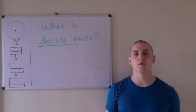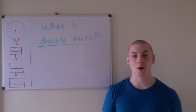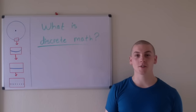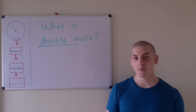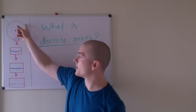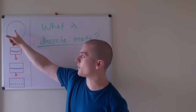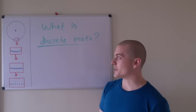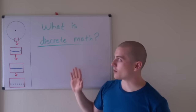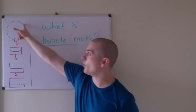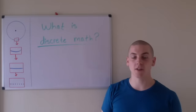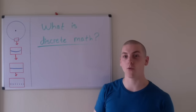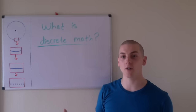Now you may be thinking, I never use math that involves infinite sets, but I promise that you do. The simplest example is with a circle. A circle, by definition, is an infinite number of points equidistant from a fixed point. And the problem with this is that if we try to write a program that prints out all of these points, it will run forever because there are an infinite number of points and therefore an infinite number of executions.